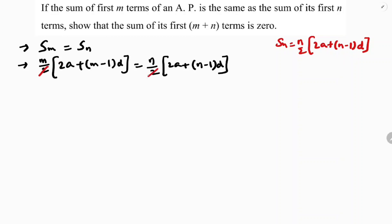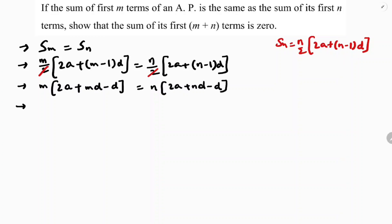Here you can cancel 2 and 2. So now: m times 2A plus mD minus D equals n times 2A plus nD minus D. Multiplying further: 2Am plus m squared D minus mD equals 2An plus n squared D minus nD.